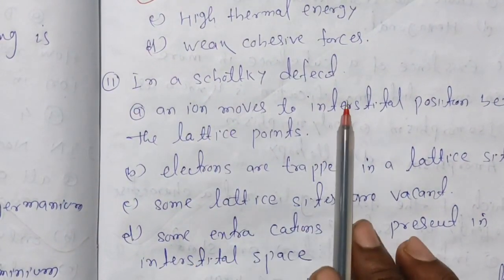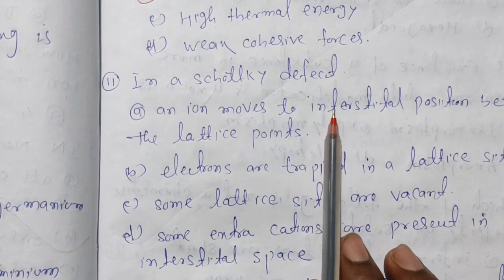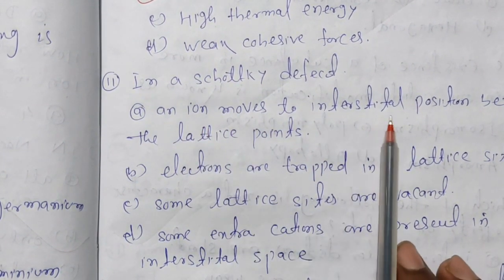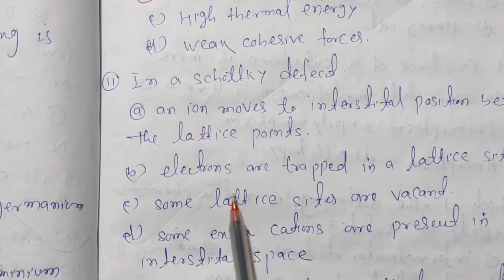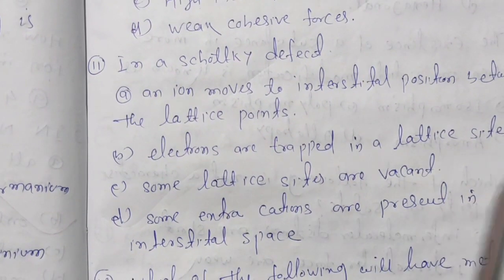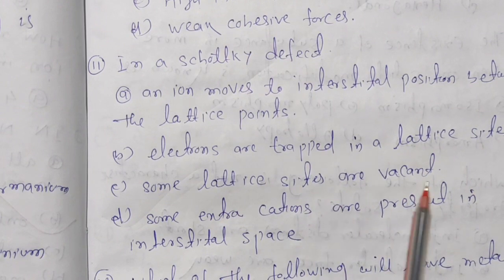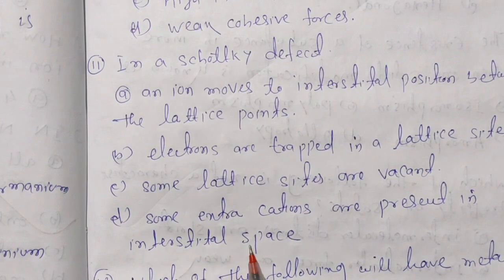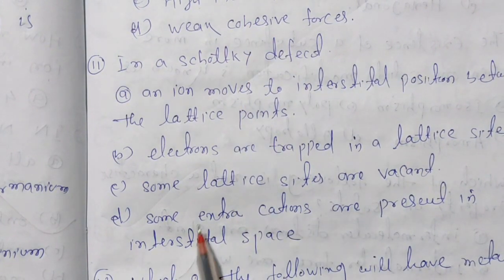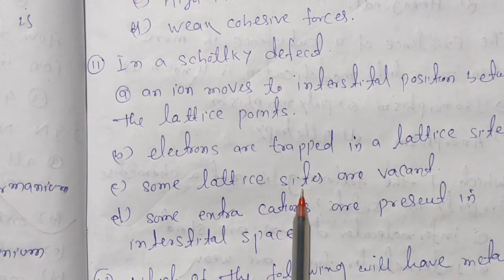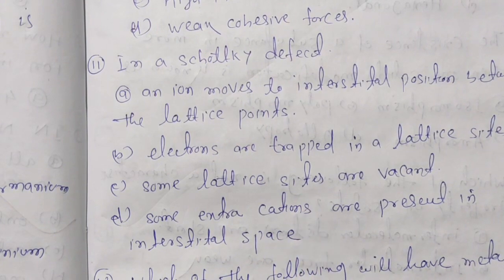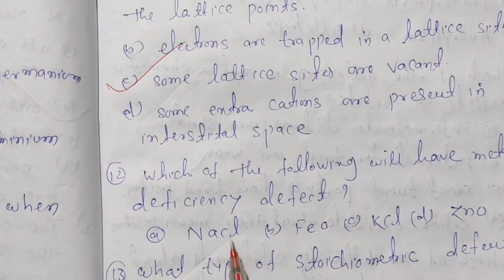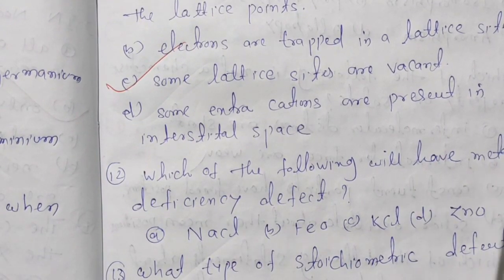In Schottky defect, an ion moves to the interstitial position between the lattice points. Electrons are trapped in the lattice site. Some lattice sites are vacant and some extra cations are present in the interstitial sites. Some lattice points are vacant — this is the metal deficiency defect.